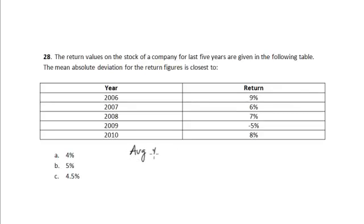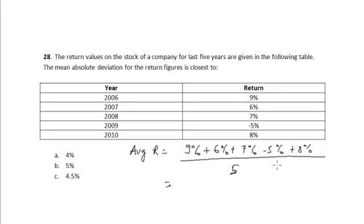the average return is equal to 9% plus 6% plus 7% minus 5% plus 8%, divided by the number of years, 1, 2, 3, 4, 5.